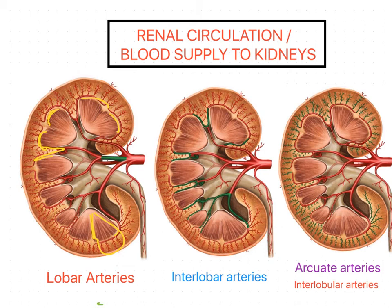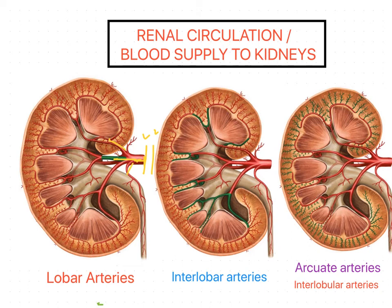The artery supplying the kidney is the renal artery, a branch of the abdominal aorta at the level of L2. The renal artery divides into a bigger anterior branch and a smaller posterior branch. The anterior branch gives four segmental branches: apical, upper, lower, and basal segments.